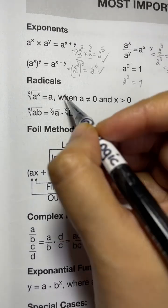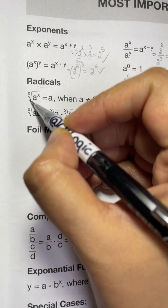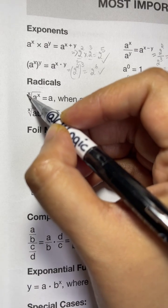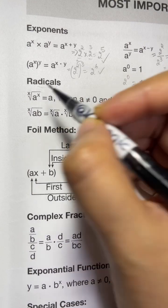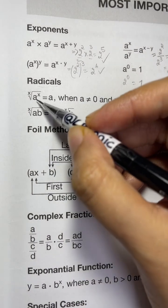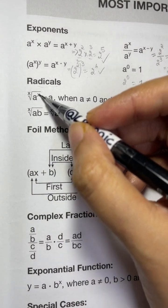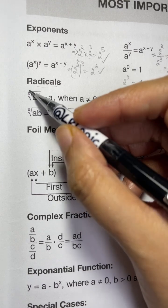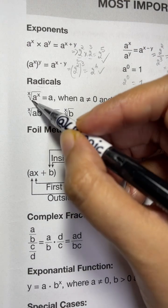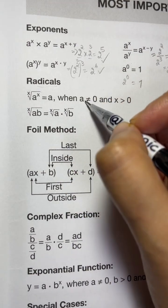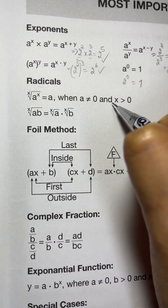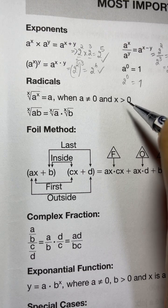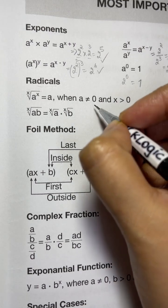Now let's go into radicals. Radicals means the root. The root symbol is called a radical, and the small number present inside it is called the index number. When you have a base a, raised to the power of x, under the same root of x, that equals a — provided a is not equal to zero and x is greater than zero.